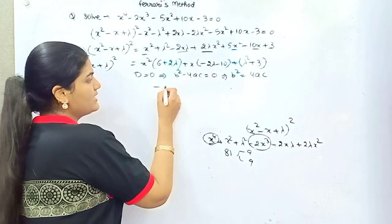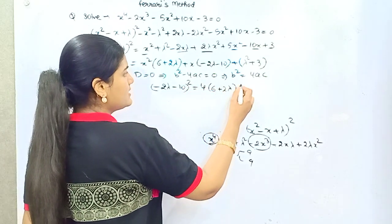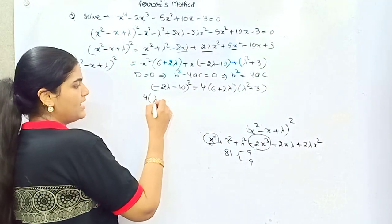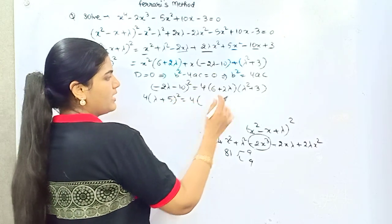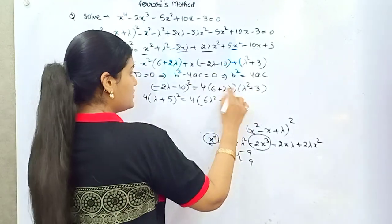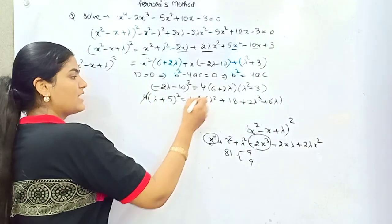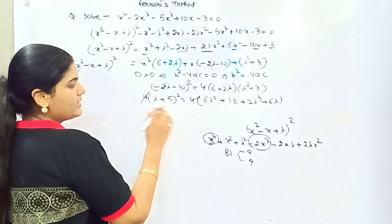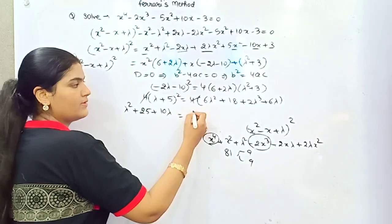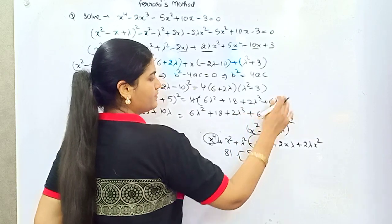Now a is the coefficient of x², b is the coefficient of x, and c is the constant. Substituting: (minus 2λ minus 10)² equals 4ac. If you take minus 2 common, you get 4(λ + 5)². Expanding and simplifying: 2λ³ + 6λ² — and expanding the square as a² + b² + 2ab — then solve this for lambda.